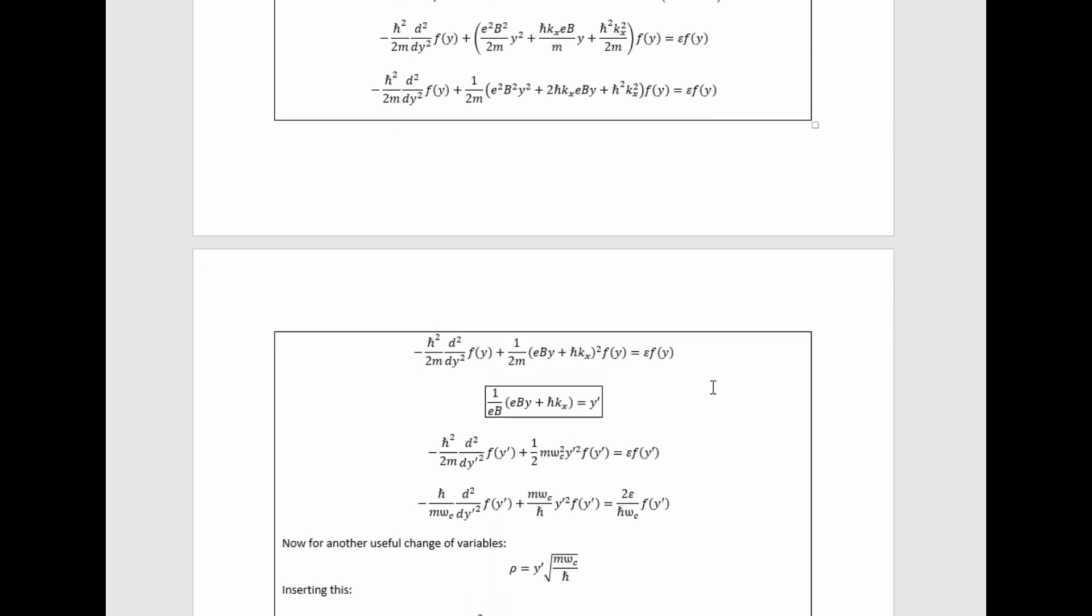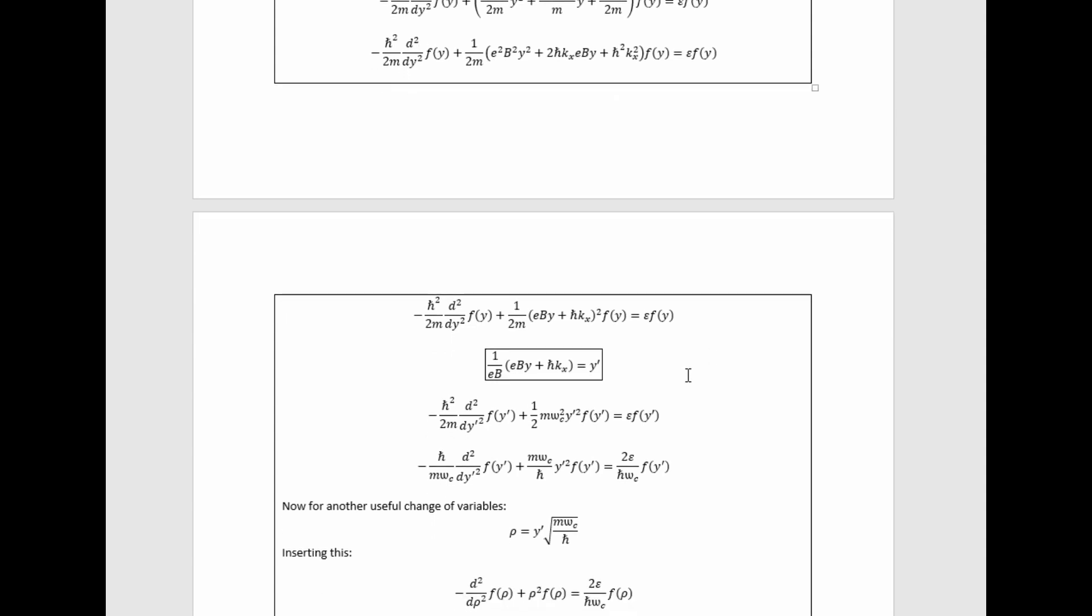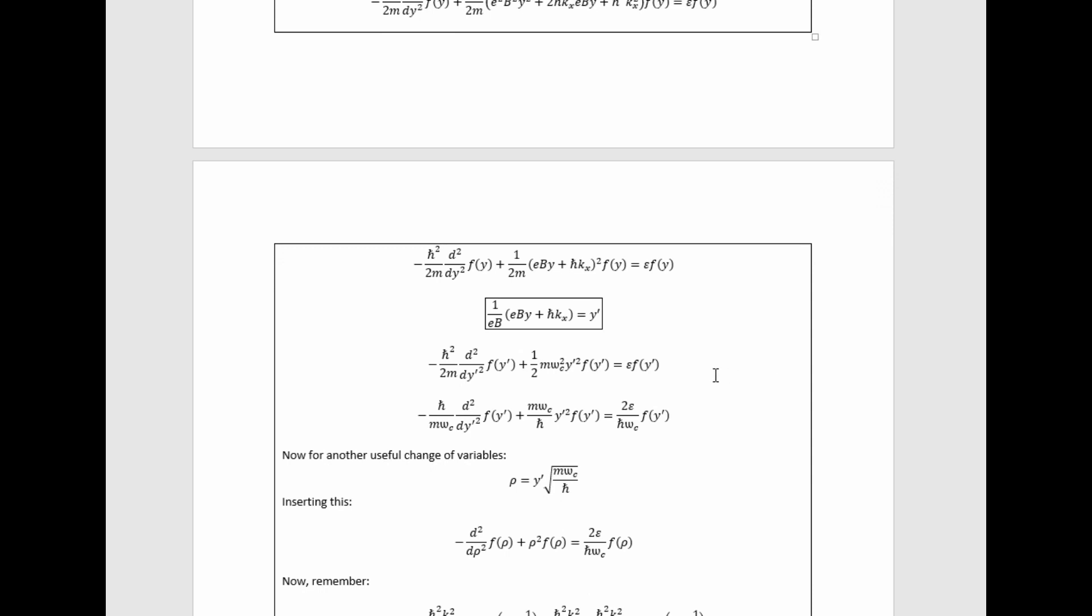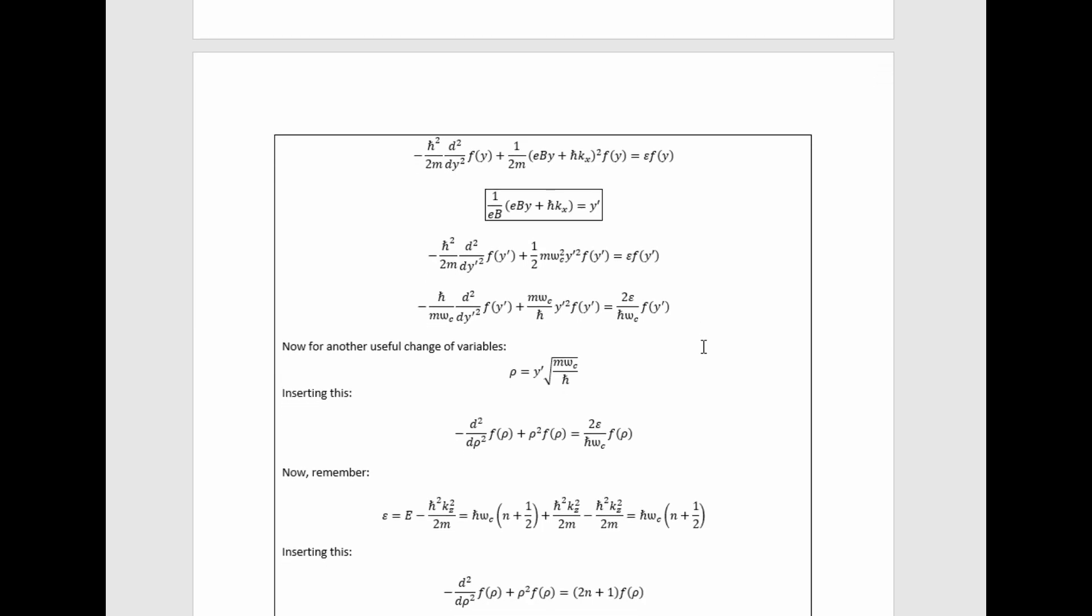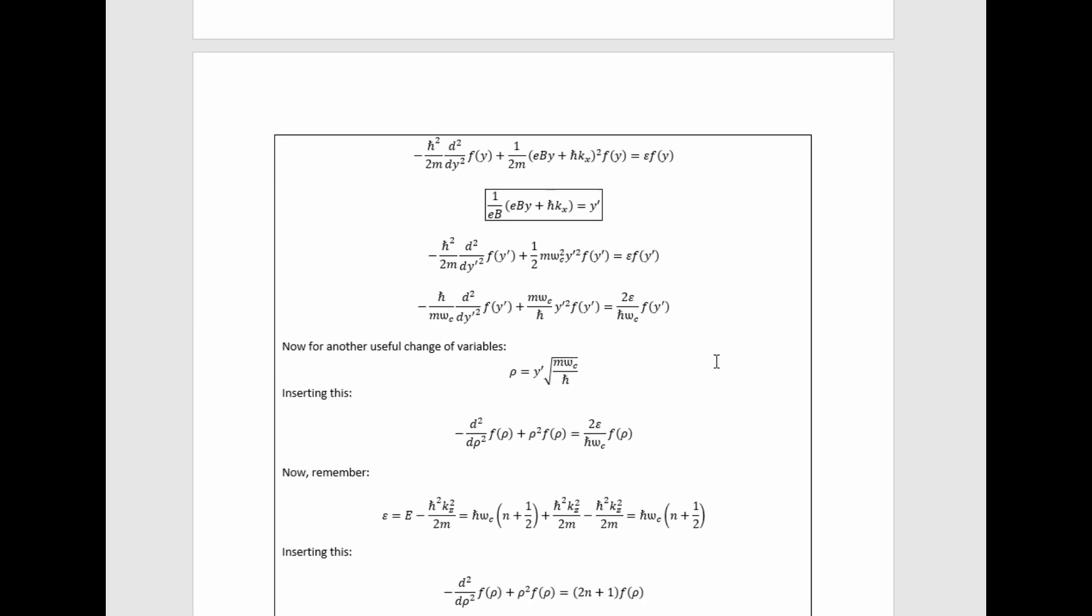Now this equation isn't that transparent, but we can get a step closer to making it sensible by doing a change of variables. This change of variables ultimately reduces this equation a little bit to this one right here. We can then rearrange the constants and perform another change of variables, given right here, to yield this much simplified equation.